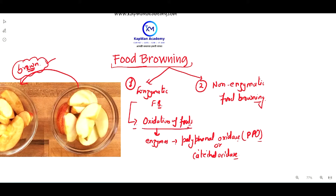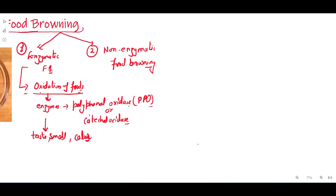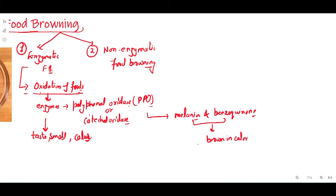When this oxidation of food occurs, it actually leads to changes in the taste of the food, smell of the food, and especially the color of the food. It also affects the nutritional values of the food. During this oxidation, certain molecules are produced, which are melanin and benzoquinone compounds. These two compounds are actually brown in color.